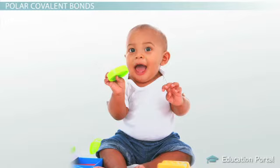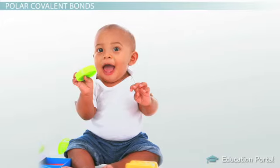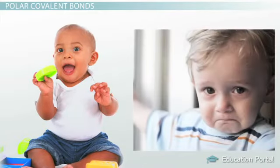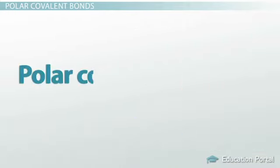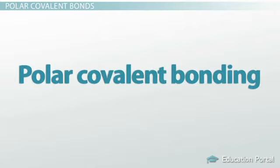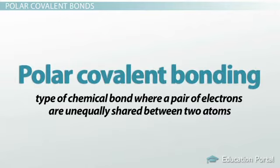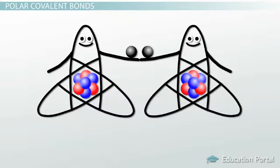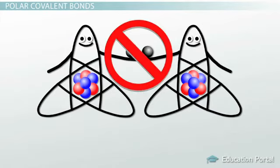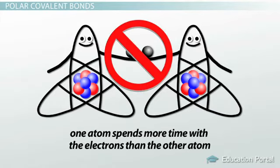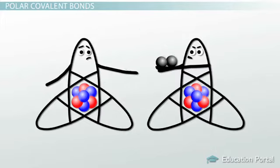Have you ever seen a bully child who seems to spend more time playing with the toy than the other child — not equally sharing the toys? This unequal sharing also happens with a type of bond called polar covalent bonding. Polar covalent bonding is a type of chemical bond where a pair of electrons are unequally shared between two atoms, because one atom spends more time with the electrons than the other and has a stronger pull.